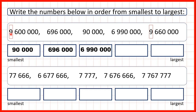So now both of these numbers have 9 in the millions, and when we go across to the hundred thousands, both numbers also have the same number — they both have 6 as the hundred thousands digit. So we need to move across again and look at our ten thousands. Here we have 6 in the ten thousands place value, but here we have a zero. So that means 9,600,000 must be next smallest.